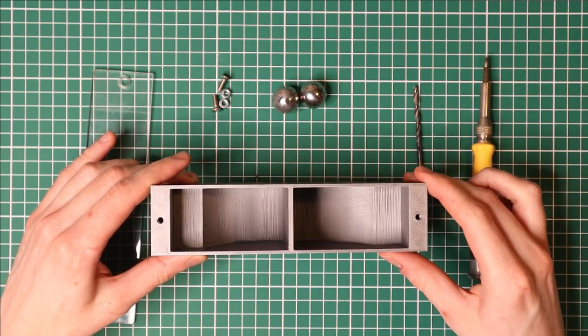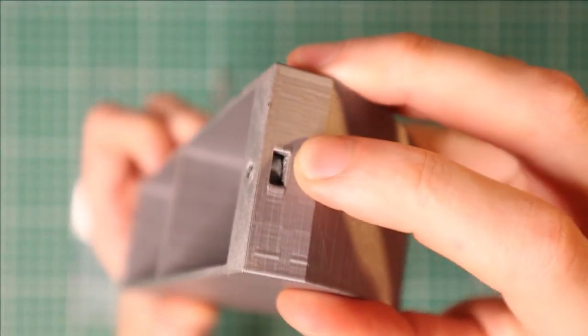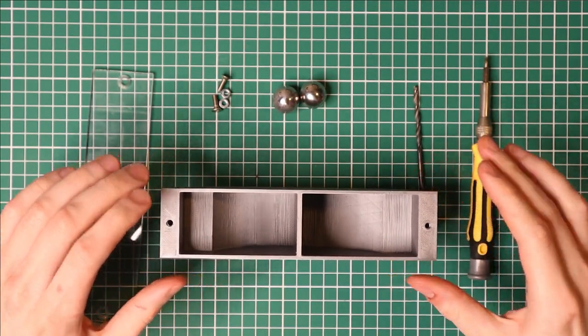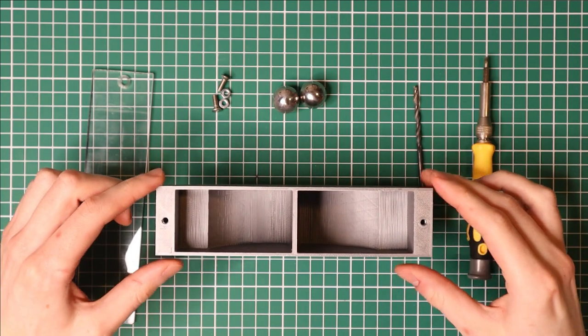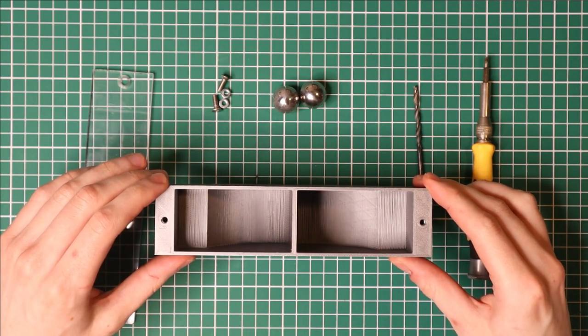Once you've done that, you can insert the nuts on the side here. And I've shown you how to do this before in my video on 3D printed gears. So if you're having any trouble getting the nuts in the pockets, you can check that out. And I will leave a timestamped link in the description below.